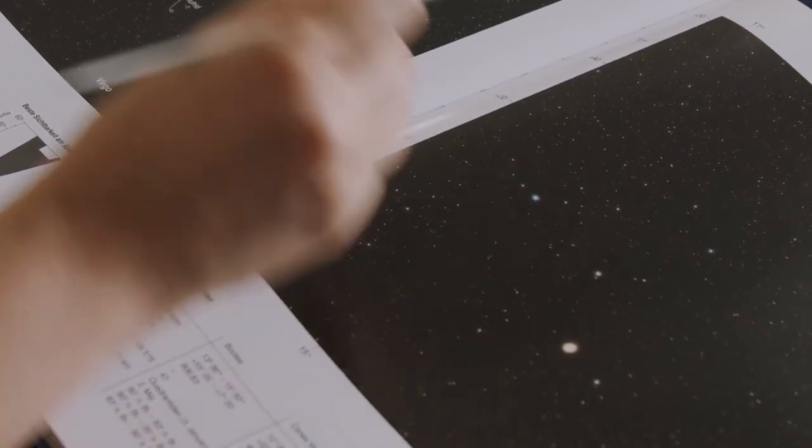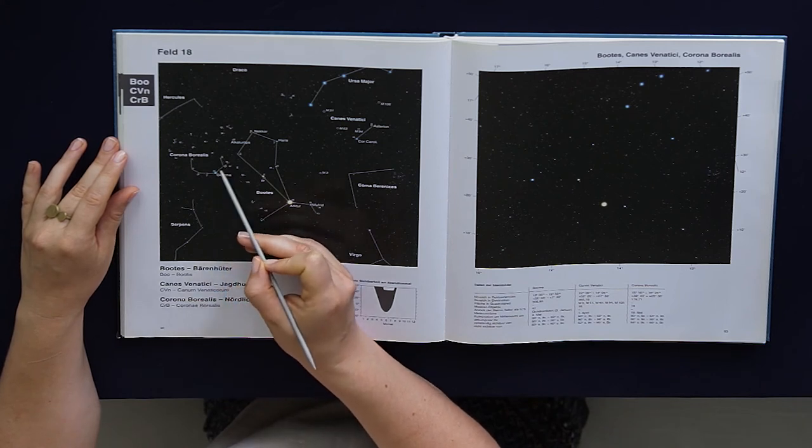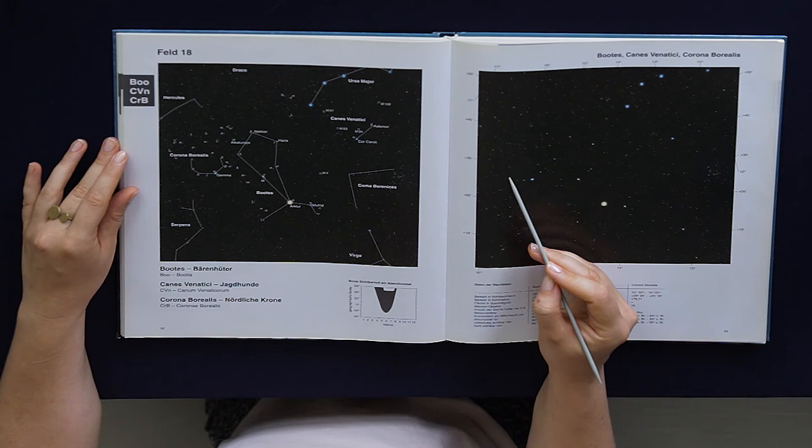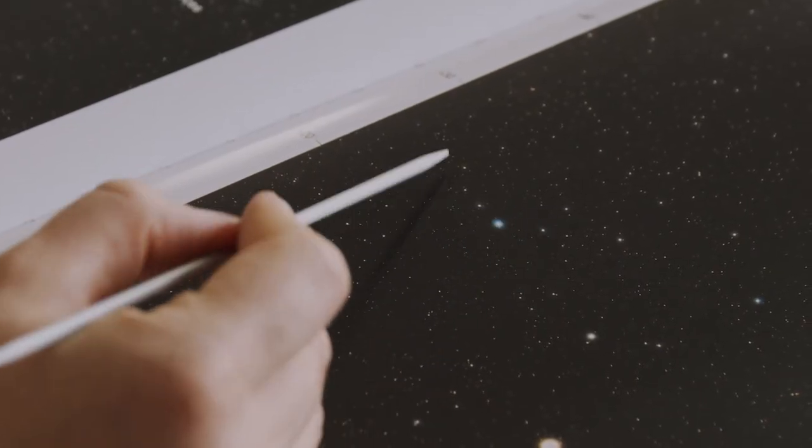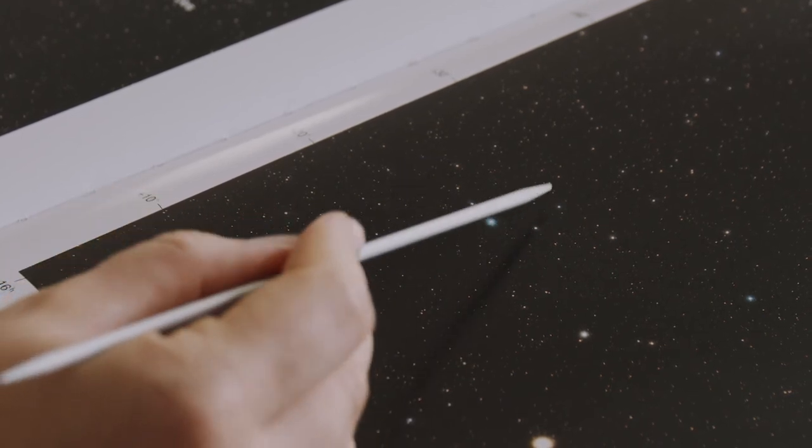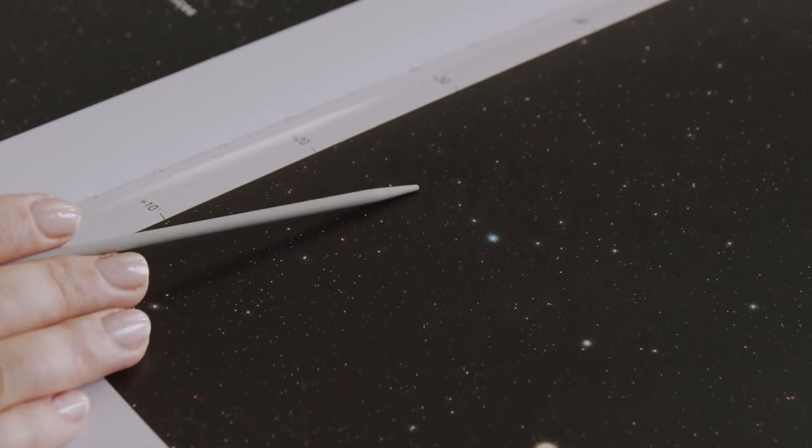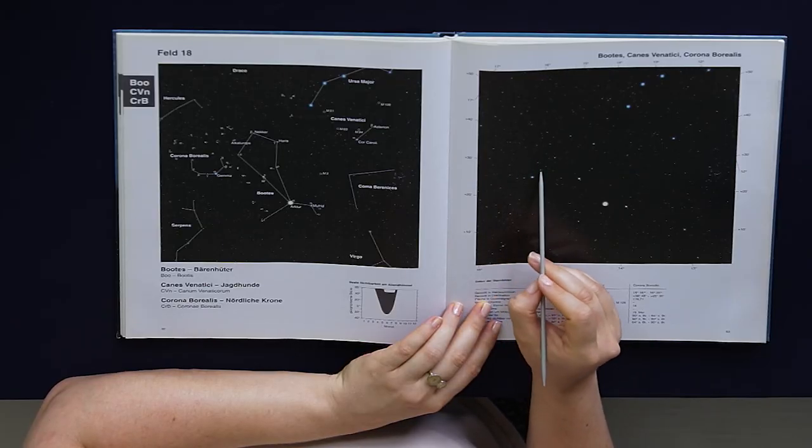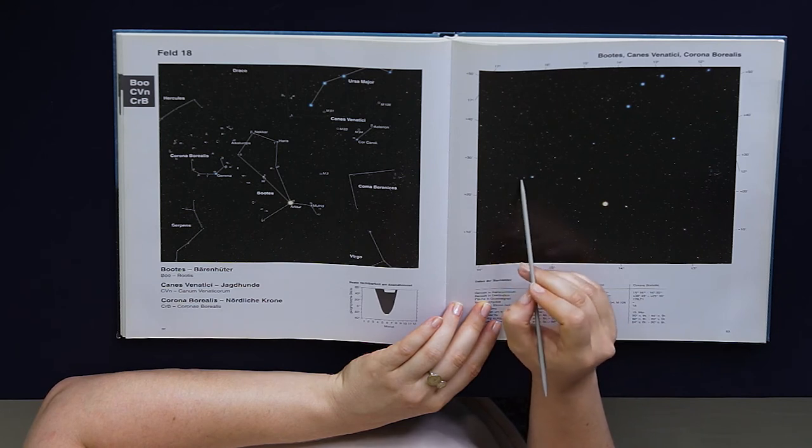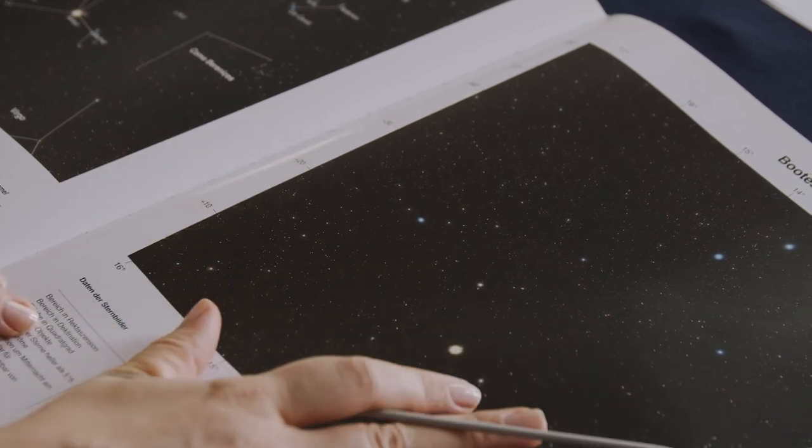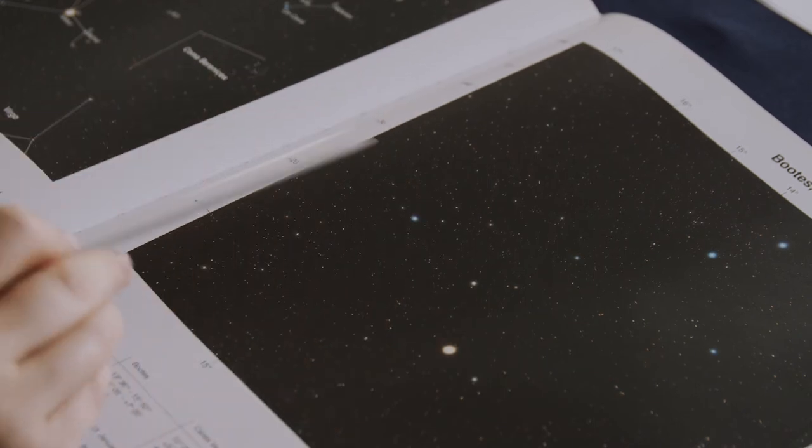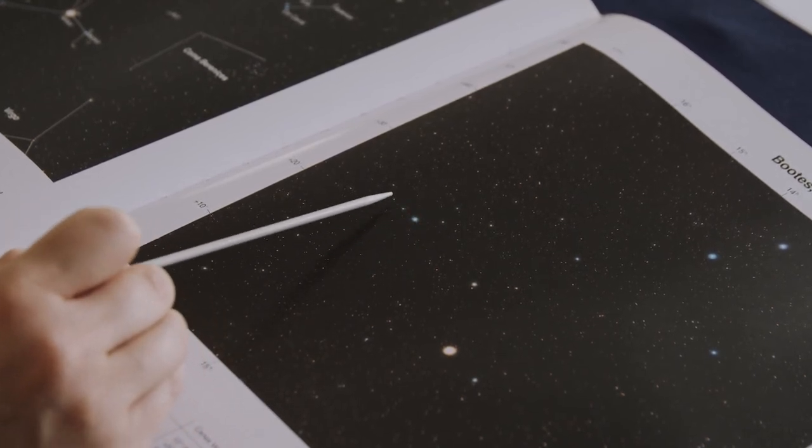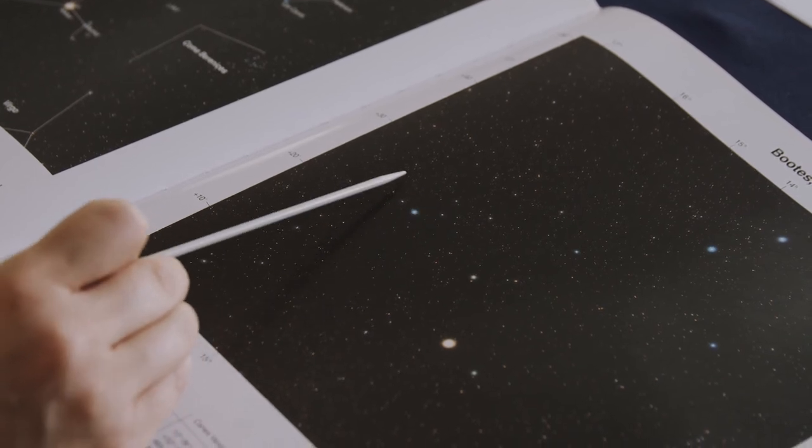This one is also interesting - Corona Borealis. The brightest star is Gemma. Once you find it, it's really quite noticeable, like a little half moon. It's called the Northern Crown. And in the 17th century, someone actually renamed all the constellations with Christian names and renamed this Northern Crown into the Crown of Thorns of Jesus Christ, but that didn't stick - it's still called the Northern Crown.